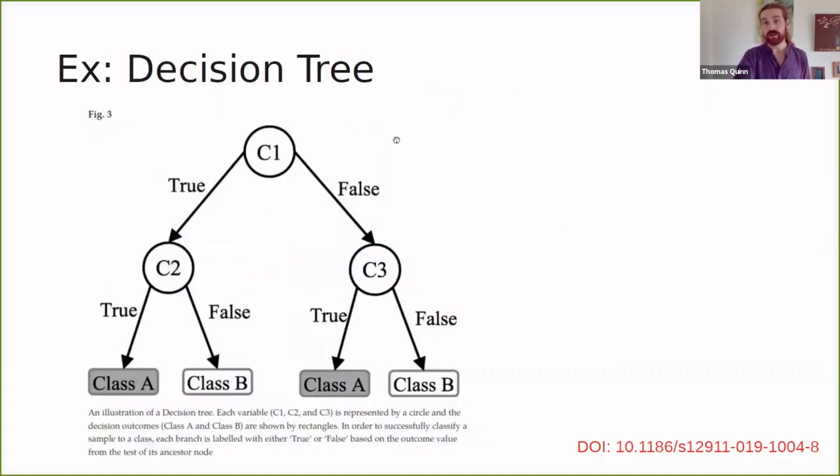You could try to learn a decision tree where you have a number of clauses that compares your predictors C1, C2, and C3 against some threshold value. And depending on whether it's true or false, you can classify samples as A or B.